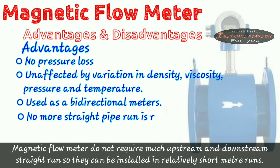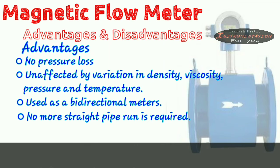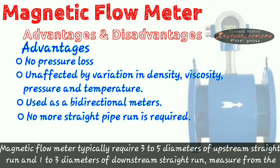Magnetic flow meters do not require much upstream and downstream straight run, so they can be installed in relatively short meter runs. Magnetic flow meter typically requires 3 to 5 diameters of upstream straight run and 1 to 3 diameters of downstream straight run.